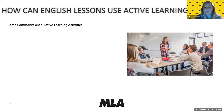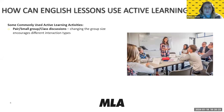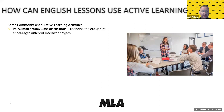Some commonly used active learning activities include pair, small group, or class discussions. Changing the size of the group will encourage different interaction types — you could have pair work, then put that into a bigger group, and then have a full class discussion, just to get students used to discussing with different group sizes and people with different opinions. This keeps them on their toes and mirrors the kinds of interactions they'll use English for in the future.